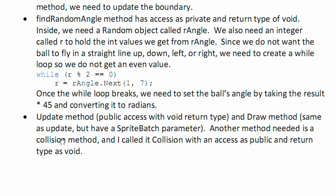The find random angle method will have an axis as private and a return type of void. Inside, we need a random object called rAngle. It has a capital A. We also need an integer called r to hold the int values we get from rAngle. Now, since we do not want the ball to fly in a straight line up, down, left, or right.